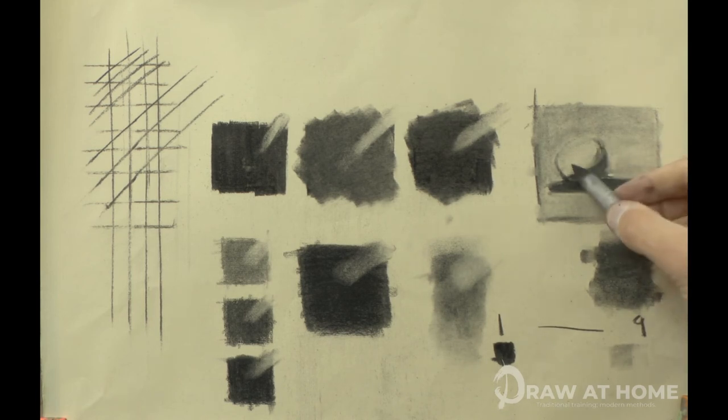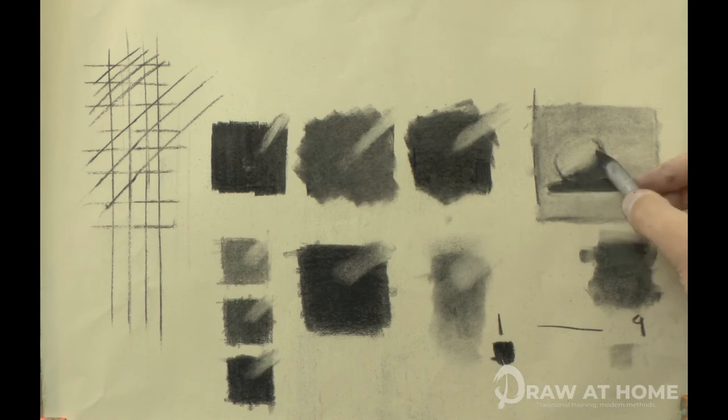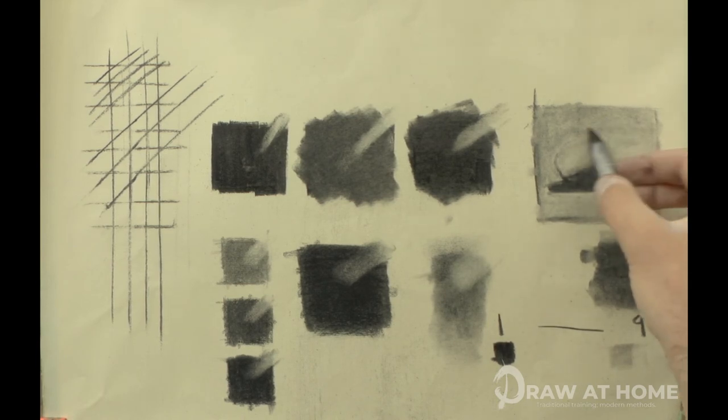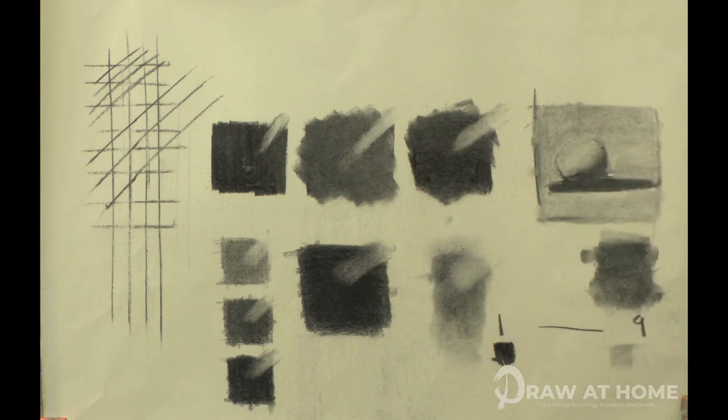By going along the edge of the shadows with the stump, I can soften them to create a rounded form and the sphere starts to take shape. Using the 4B Generals pencils, I add in the core shadow, as I know this is the darkest patch and by using the Generals, not Willow, it won't come off by accident. And using the stump just to soften this out slightly.